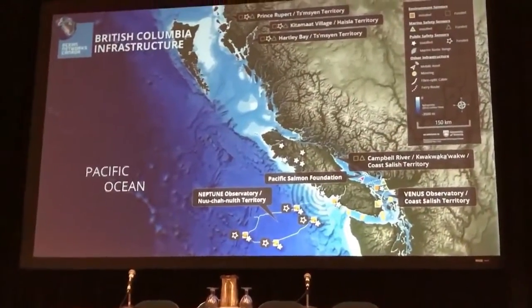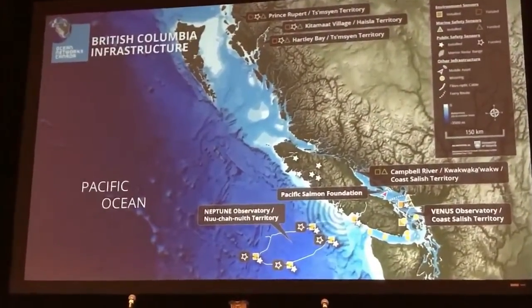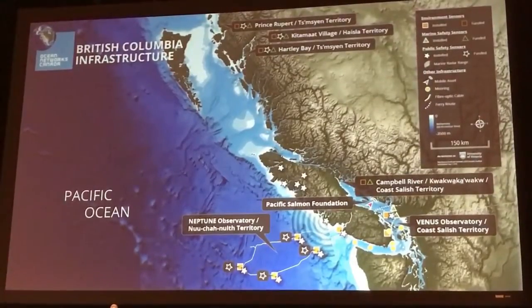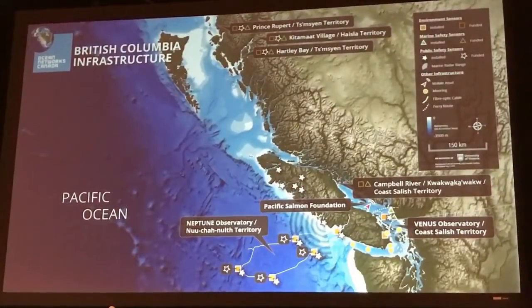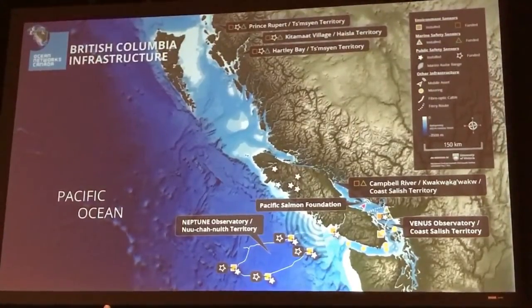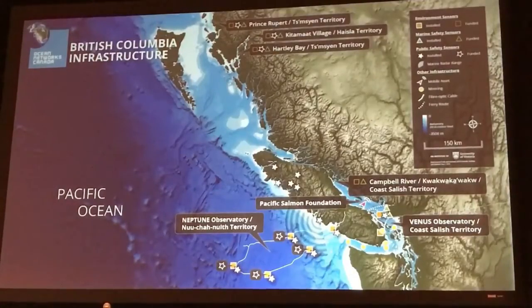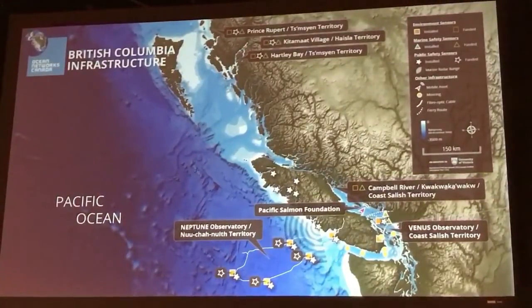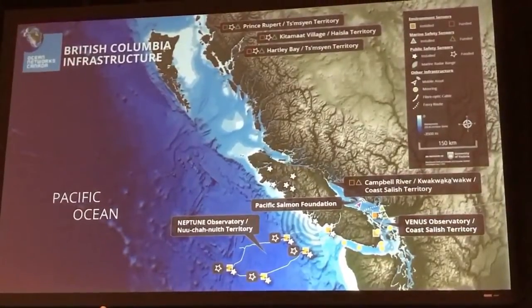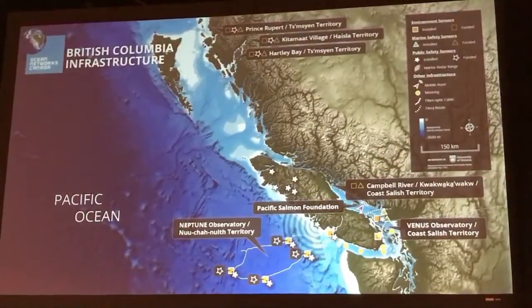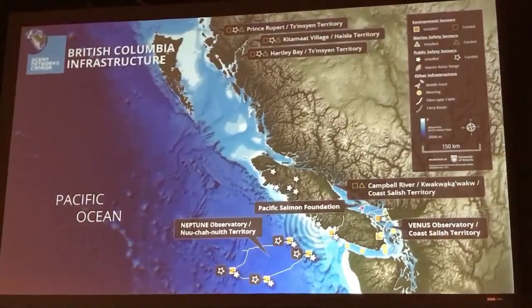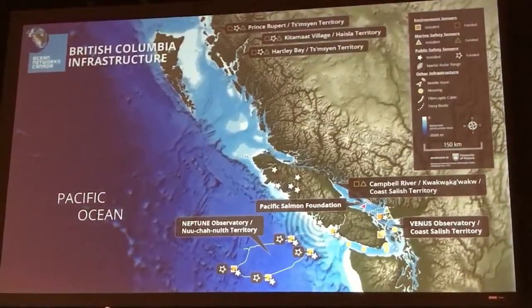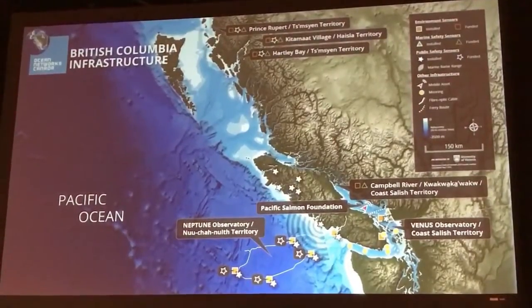Because we were able to demonstrate to our funders that we could install a system in the Arctic and keep it going 24-7 — we only go up once a year to operate and maintain it — we also put a proposal in to expand these community observatories into the north coast of British Columbia: Prince Rupert, Kitimat Village, Hartley Bay along the Douglas Channel, Campbell River on Vancouver Island, and expand the systems on Neptune and Venus. We decided we want to do something that benefits the country, not just scientific researchers, and we began to produce what we call data products using the data from these observatories.